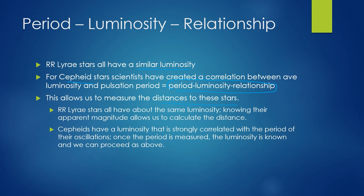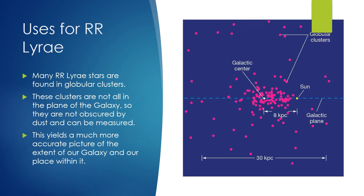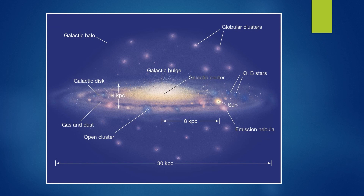RR Lyrae stars all have about the same luminosity, so knowing their apparent magnitude allows us to calculate their distance. Cepheids have a luminosity strongly correlated with the period of their oscillations — once the period is measured, the luminosity is known, and we can calculate their apparent magnitude and distance. Many RR Lyrae stars are found in globular clusters, which are not all in the plane of the galaxy, so they're not obscured by dust and can be measured. This yields a much more accurate picture of the extent of our galaxy and our place within it — this is an artist's rendering of the galaxy after finding this data through variable stars.